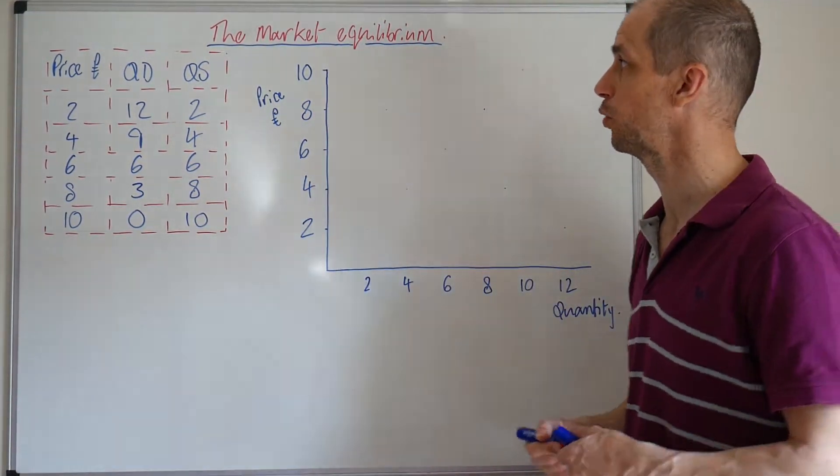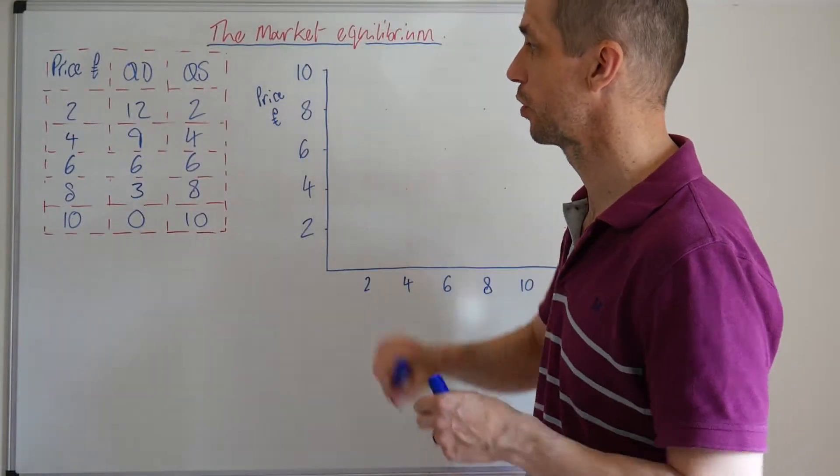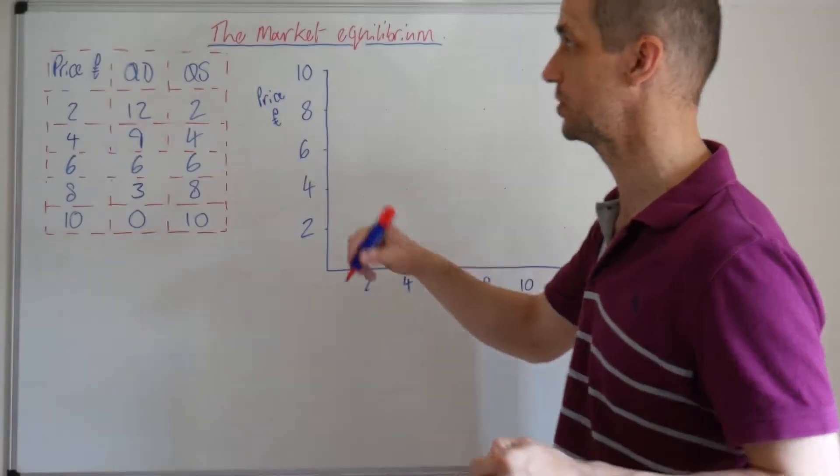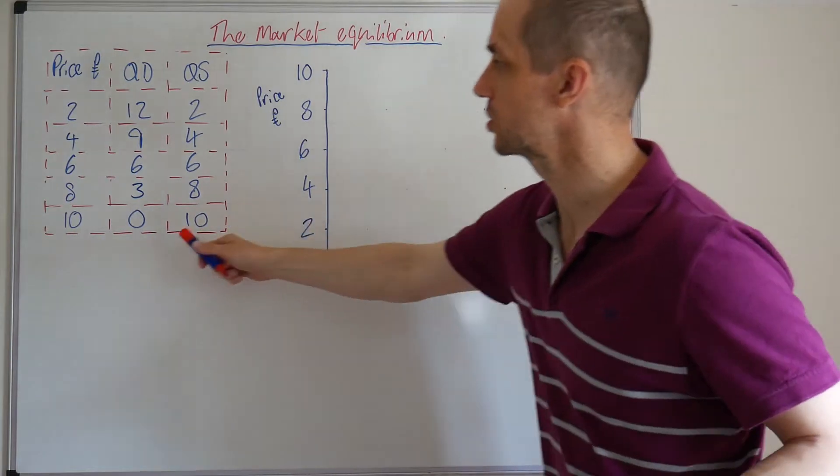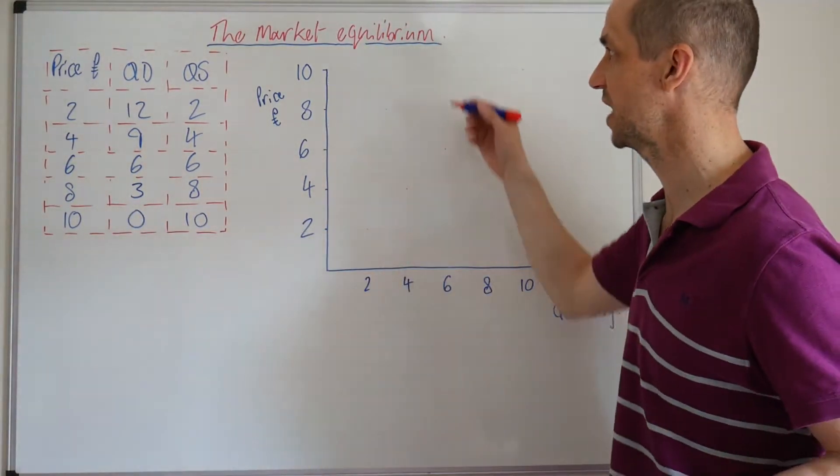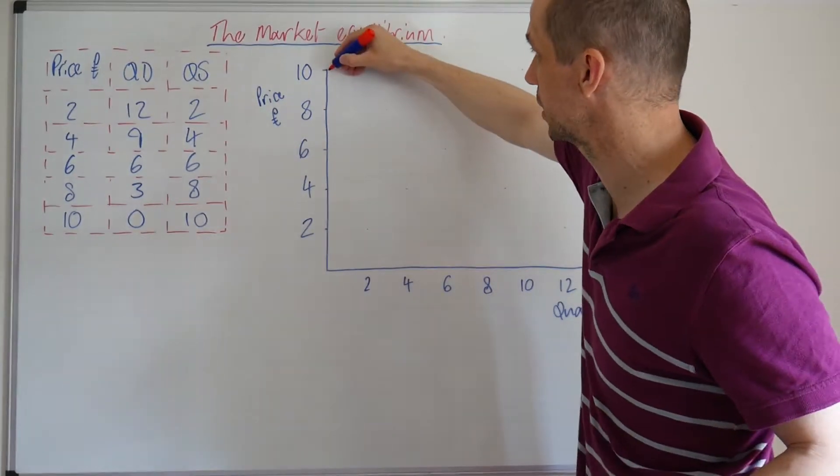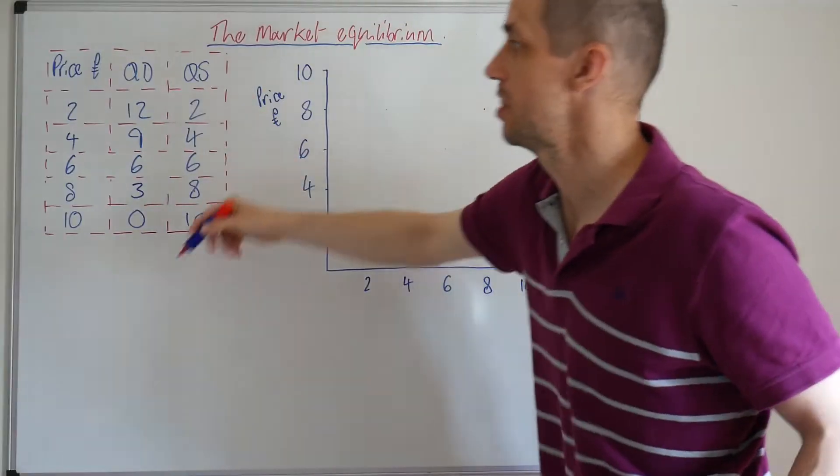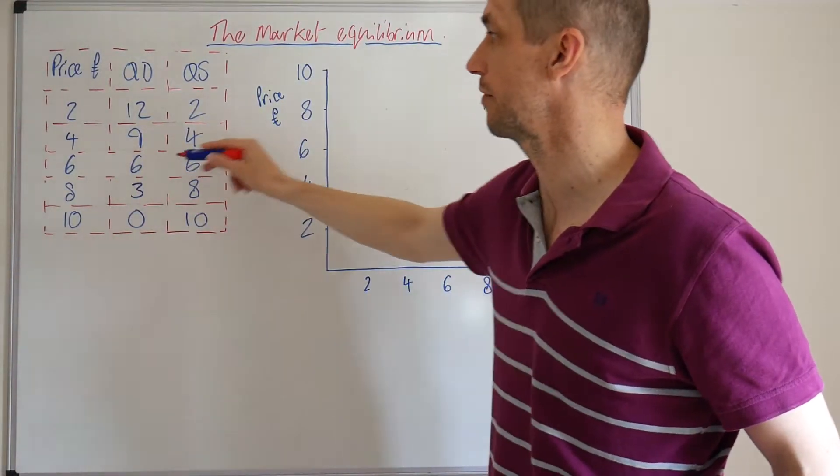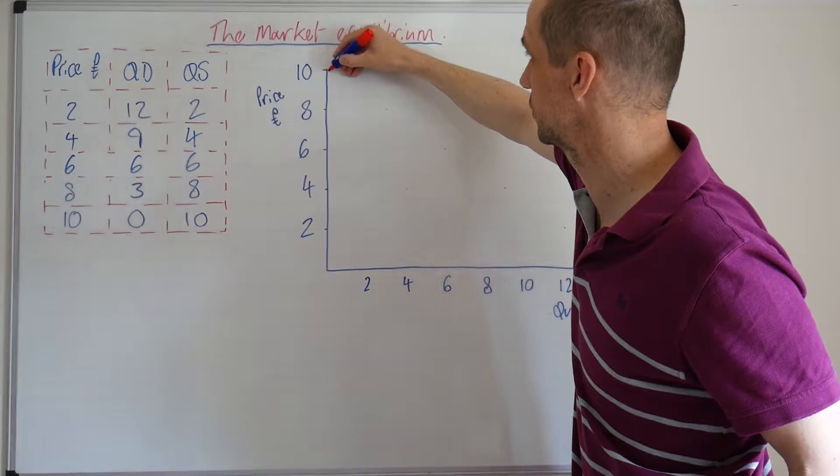So if we just plot these points out, let's run through firstly our demand position. So I'm going to start with the price level of 10 here. So at 10, we can see that zero is demanded. Meanwhile, as we then run through to a price of eight, we can see that three is demanded. Then price is six. We have quantity demanded of six and so on.